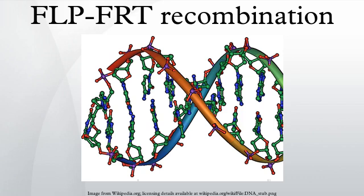FRT-mediated cleavage occurs just ahead of the asymmetric 8bp core region on the top strand, and behind this sequence on the bottom strand.